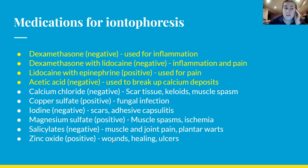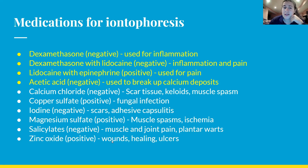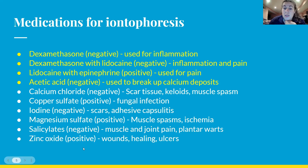For medications in iontophoresis, the main ones to highlight are: dexamethasone, which is negative, used for inflammation; lidocaine paired with either epinephrine or dexamethasone — dexamethasone plus lidocaine is for inflammation and pain; lidocaine with epinephrine is positive and used for pain as well. Acetic acid is negative — that's an important one — used to break up calcium deposits. Zinc oxide is positively charged, used for wound healing and ulcers.